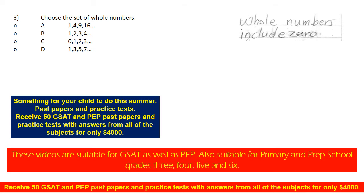Choice B is what you call the set of counting numbers. Counting numbers do not include 0. So the counting numbers are 1, 2, 3, 4, 5, 6, 7, 8, 9, 10, 11, 12, 13, 14, 15, and so on. So B is not the answer.